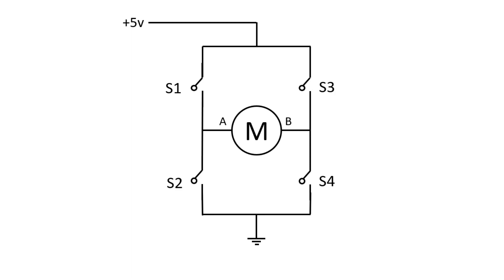Now what will happen if we close switch one and switch two, or switch three and switch four? As you can see, the plus five volts would go directly to ground — it will be a short circuit. So we cannot do this.